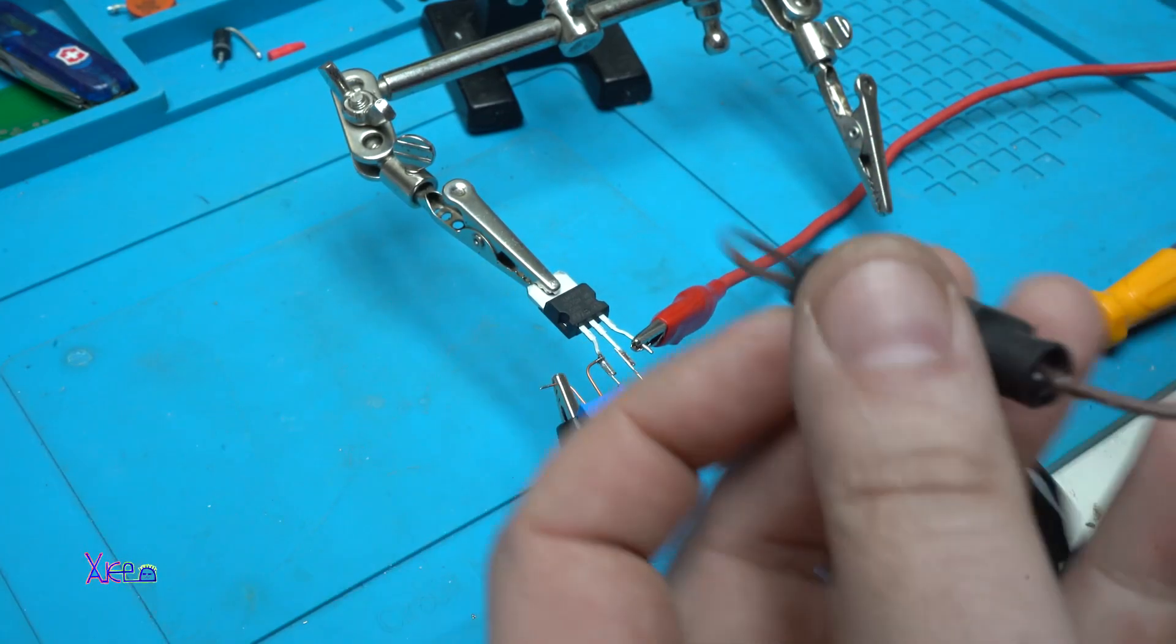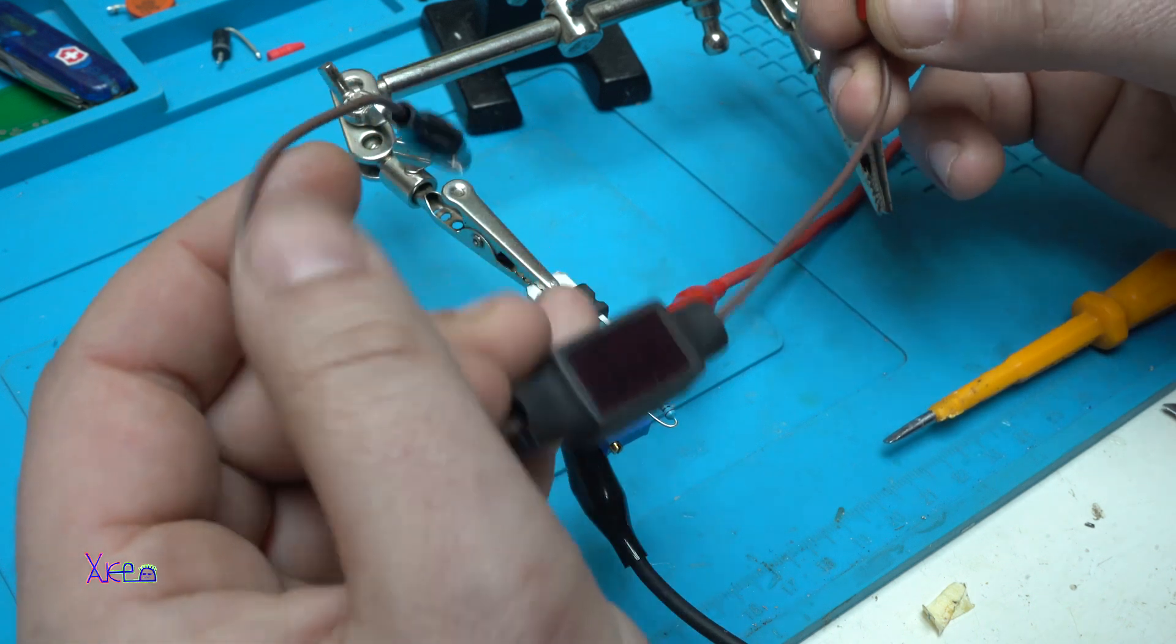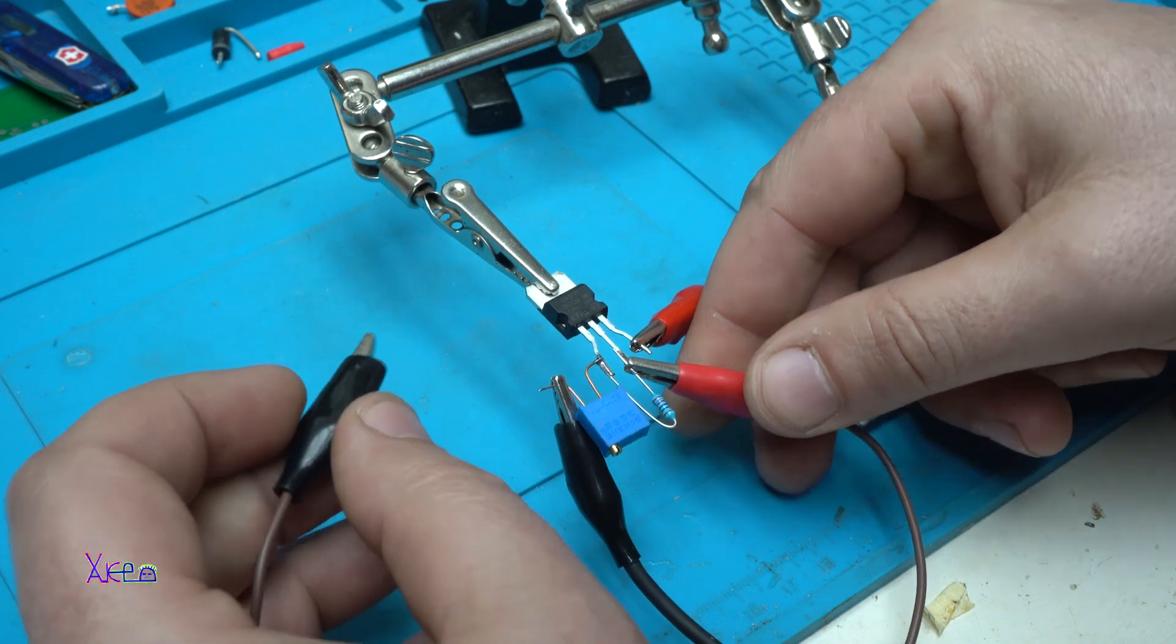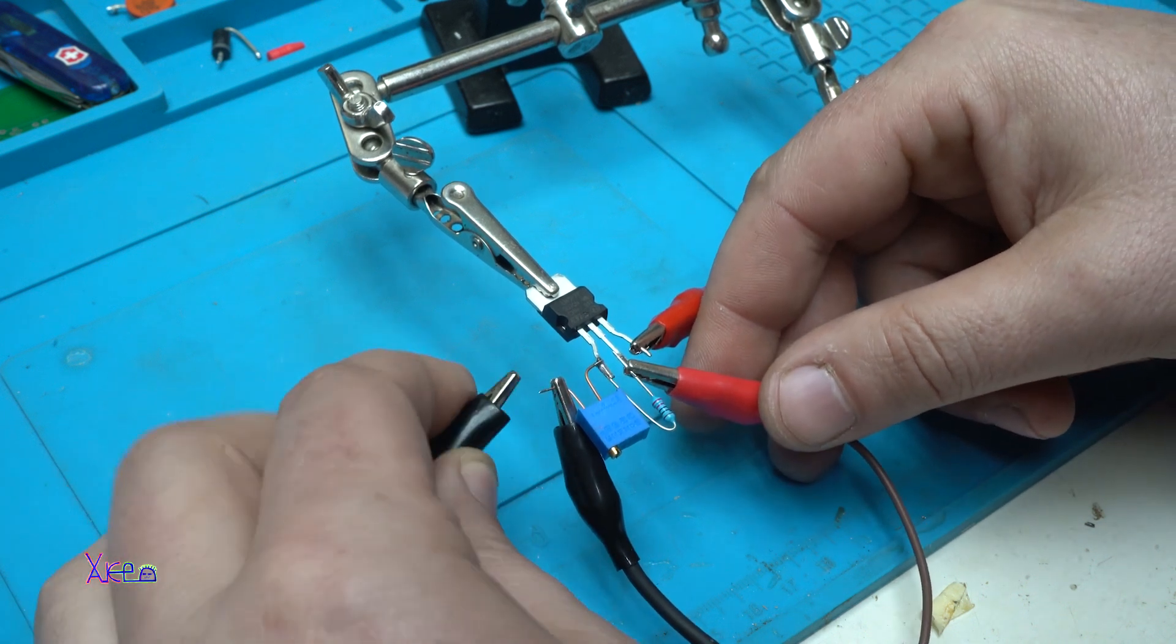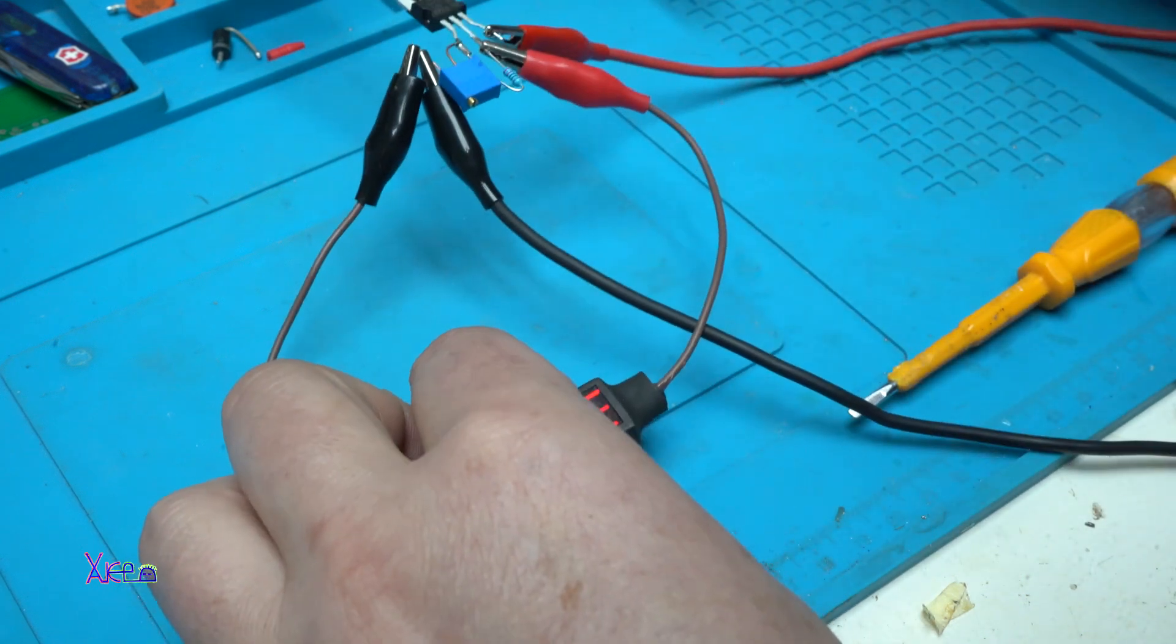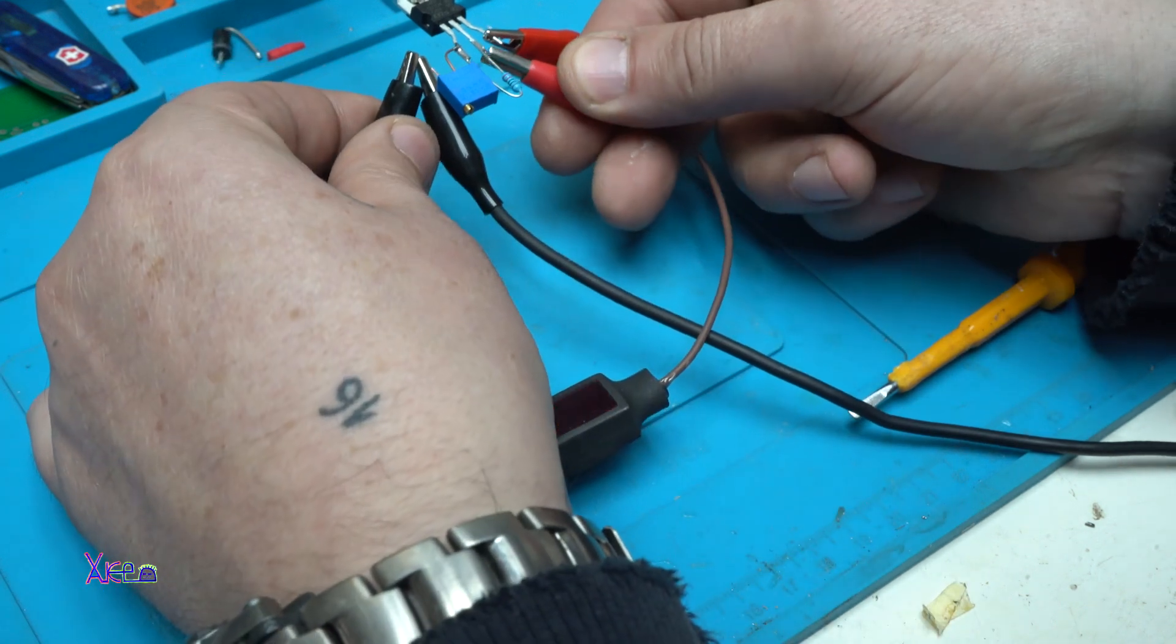I'm using this homemade two-wire voltmeter. The output is pin number 2 and ground. It's opposite, I need to change.